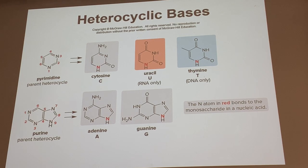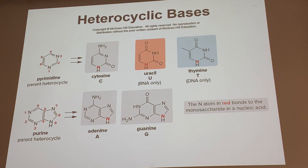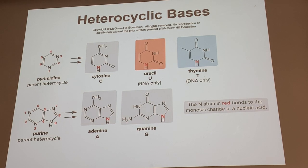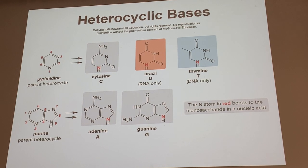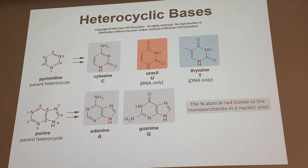As far as knowing these structures goes, it will be similar to what we did with lipids — we probably won't ask you to draw these from scratch. But you should be able to recognize them: if given structures and names, you should be able to match them, and if you see a structure, you should be able to identify it as cytosine or guanine. You should know these, though perhaps not quite as in depth as carbohydrates and amino acids.